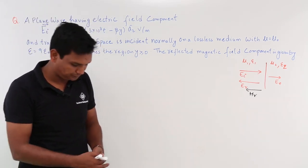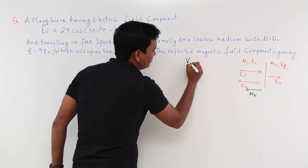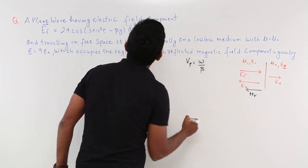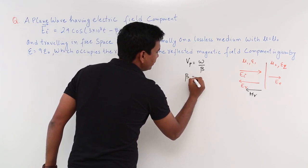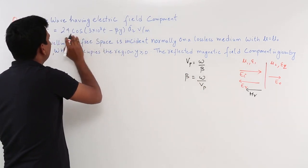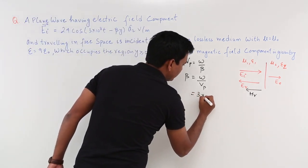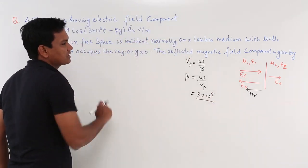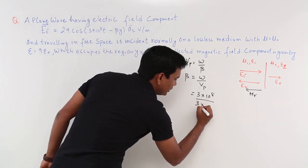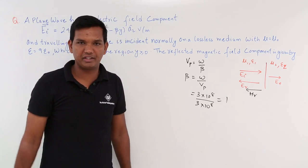This wave is travelling in free space. If it is travelling in free space, what will be Vp? It will be ω/β. So β would be ω/Vp. The ω given in this problem is 3×10⁸, and since an electromagnetic wave in free space travels with the speed of light which is also 3×10⁸, we conclude that β = 1.